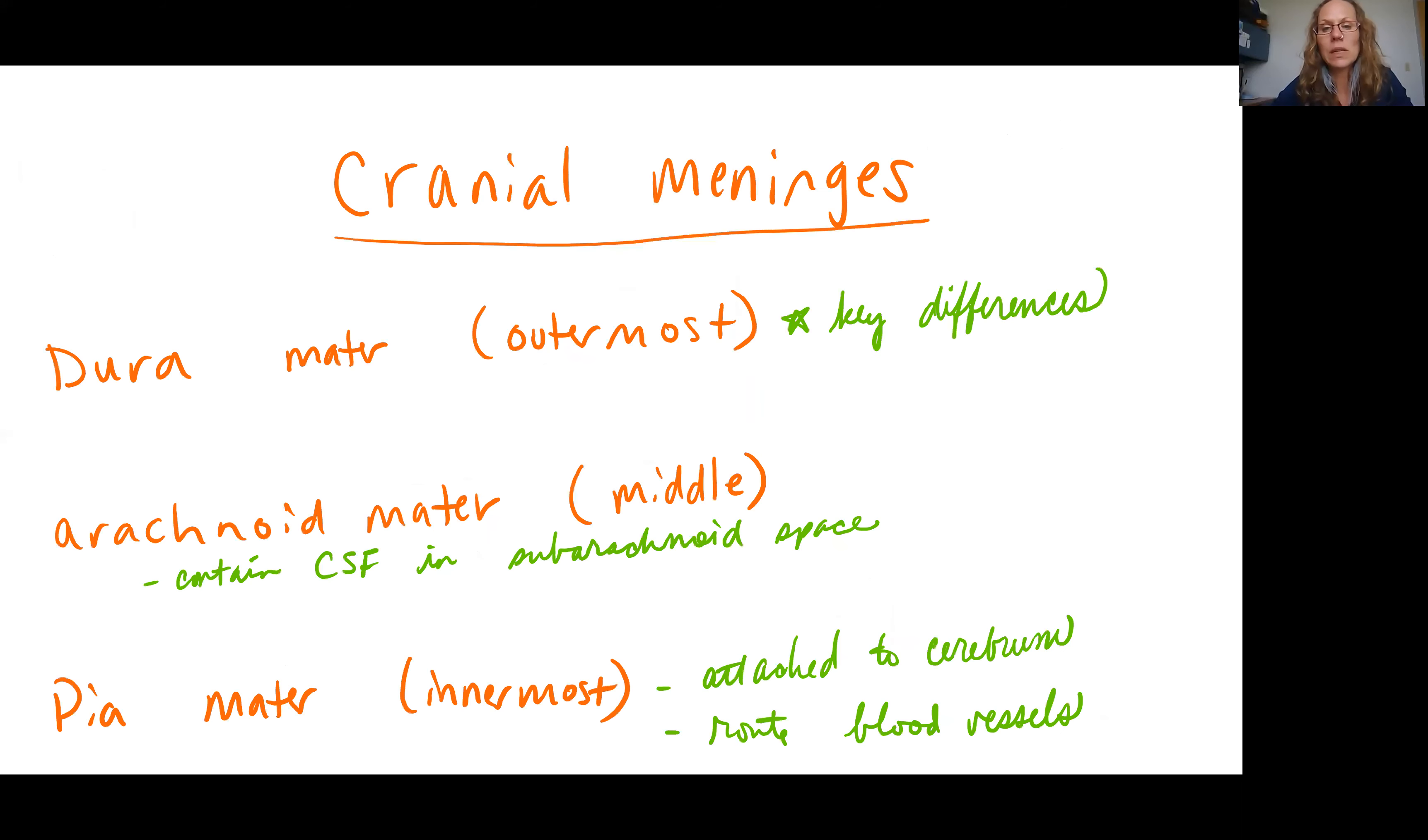Let's talk about those cranial meninges first. You still have three layers, just like we saw in the spinal cord. You have the dura mater on the outside, the arachnoid mater in the middle, and the pia mater innermost firmly anchored to the neural tissue.